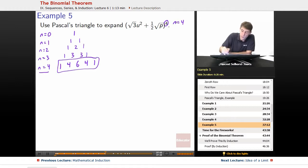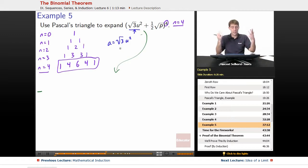So that's the row that we will actually wind up using because our n equals 4. So that we don't wind up getting cramped, I'm going to do the expansion down here. So our first thing will be sum blank times, well, what's our a? Root 3u squared is what our a is equal to. In this case, the a is all of root 3u squared, and the b is all of 1 half root p.